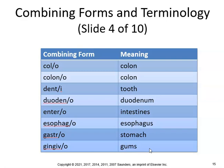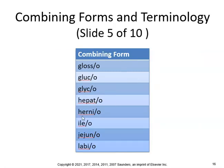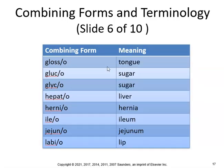Gingivectomy or gingivitis — anything dealing with the gums. Gloss means tongue — glossotomy is incision of the tongue. Gluco or glyco — glycolysis is breakdown of sugar. Hepato — hepatomegaly is enlargement of the liver. Hern — herniorrhaphy is suture of the hernia. Ilea — ileostomy is a new opening of the ileum to the outside of the body. Jejunum — cholecystojejunostomy is a new opening between the gallbladder and the jejunum. Labia or labio — glossopharyngeal pertains to the lips, tongue, and throat.